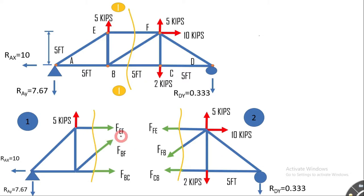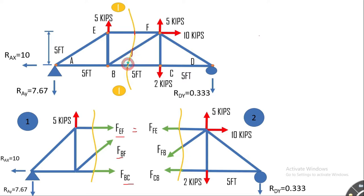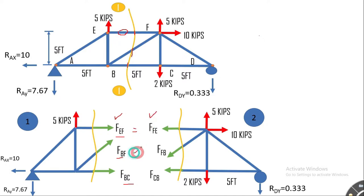The forces shown by the green arrows are internal forces or member forces we are trying to determine: FEF, FBF, and FBC. FEF is going to equal FFE because they must maintain equilibrium at section 1-1, and each member can only have one value of member force. Similarly for the BF and BC members. Whether you calculate FEF or FFE, they will be the same.